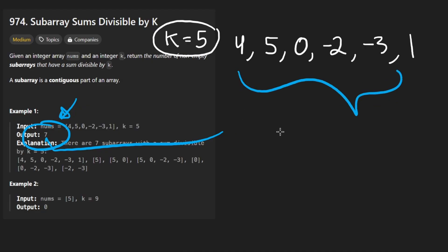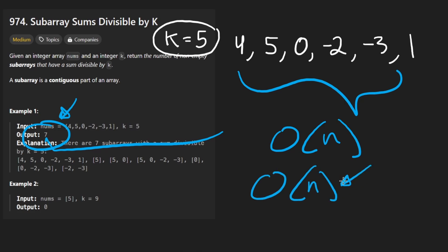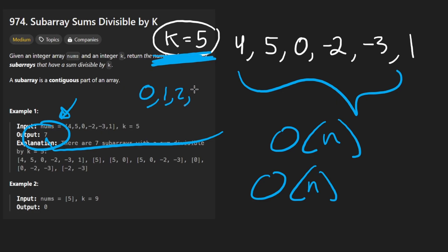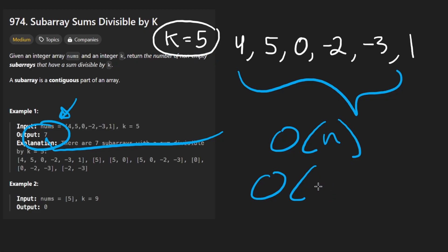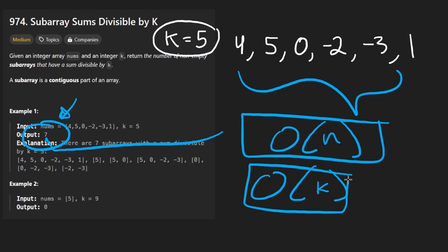Obviously it's a linear time solution. You might think the hash map is also linear in the worst case, but actually it's more efficient than that — the number of possible remainders when modding by k is only zero through k minus one, so the max size of the hash map is k. So time complexity is O(n) and space complexity is O(k).